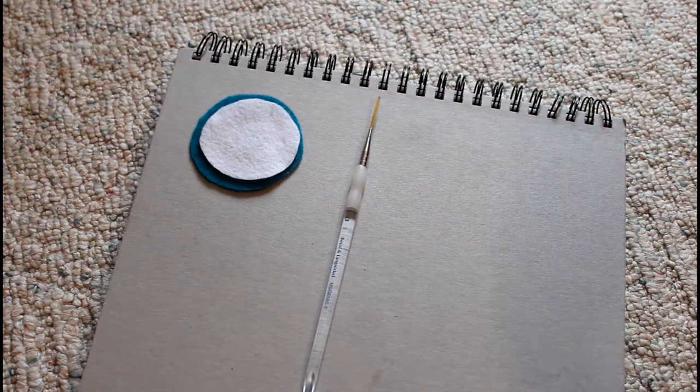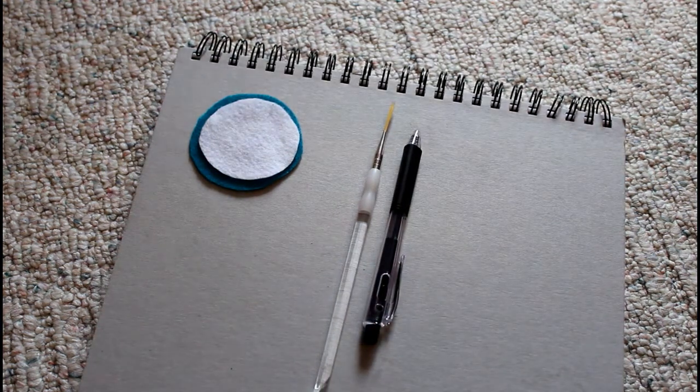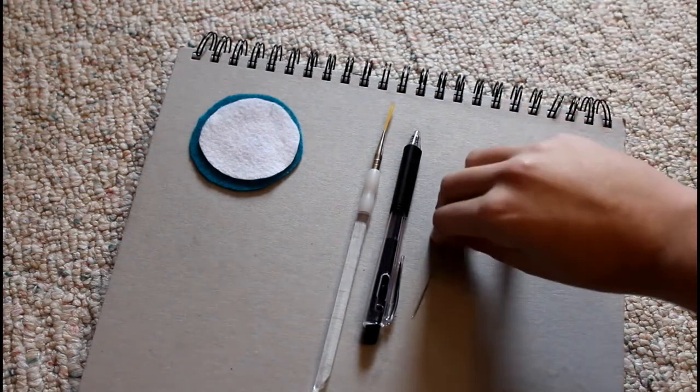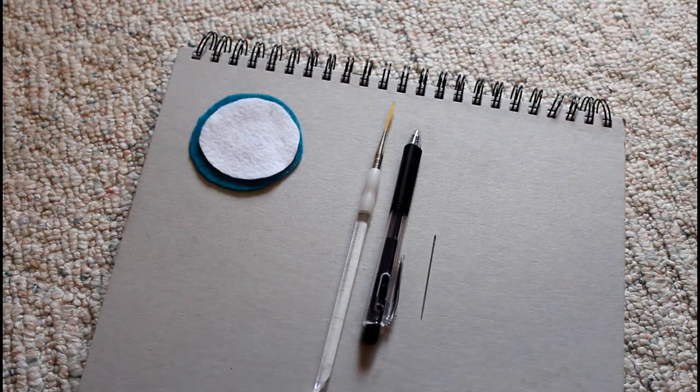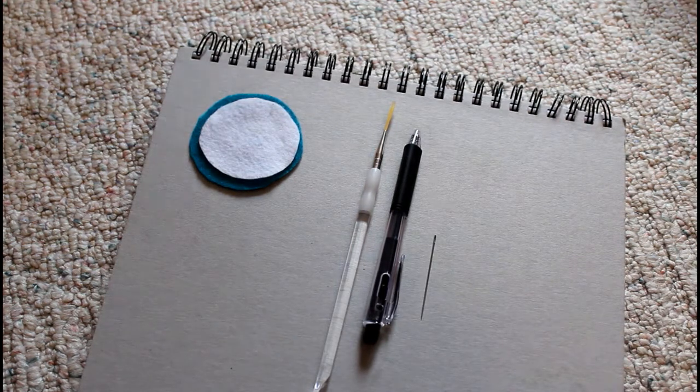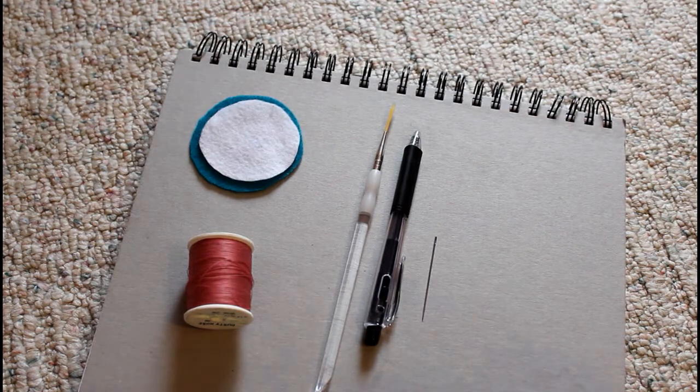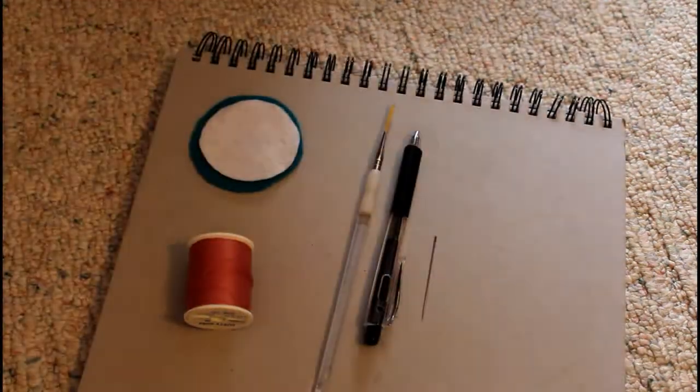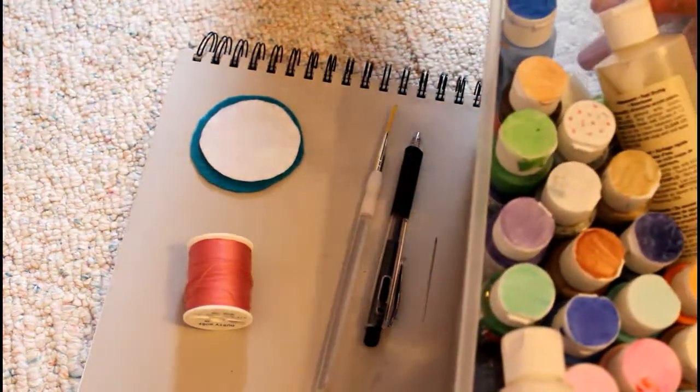You're also going to need a paintbrush, a pen to draw on the felt if you're doing a more complicated design. Pencils won't work. You're also going to need a sewing needle, preferably one with the big eye. If you're using embroidery thread or thicker thread like me, I'm using this button thread that's kind of like rose color. And then you're also going to need a bunch of acrylic paint.